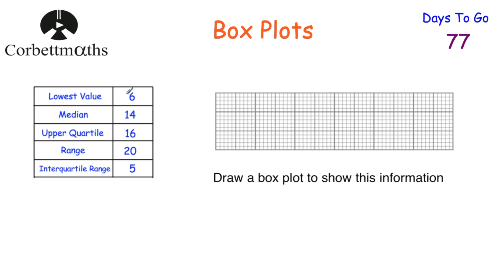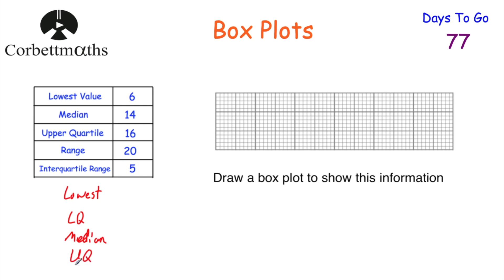Now let's have a look at a question for you to try. We've got a table and we're told the lowest value, the median, the upper quartile, the range, and the interquartile range, and I would like you to draw a box plot. Feel free to press pause and draw a box plot for this information. To draw a box plot we need to know five things: the lowest value, the lower quartile, the median, the upper quartile, and the largest value — the highest value.